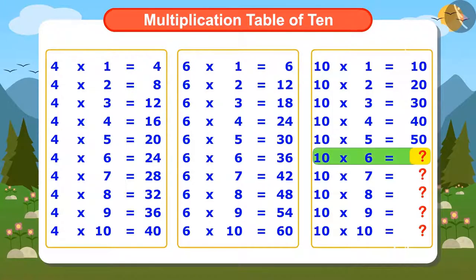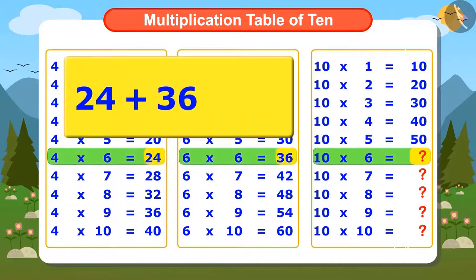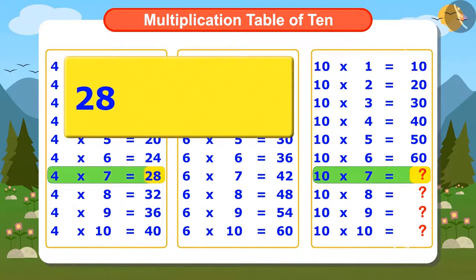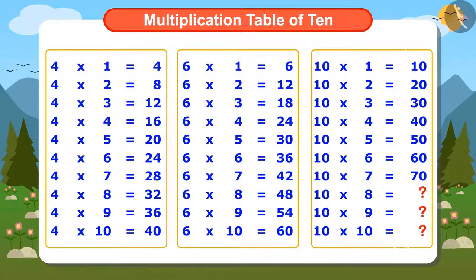To find the sixth number of the Multiplication Table of 10, I will add 24 and 36. The answer is 60, so 6 times 10 is 60. To find the seventh number, we add the seventh number of the Multiplication Table of 4, which is 28, and the seventh number of the Multiplication Table of 6, which is 42. The answer is 70, so 7 times 10 is 70.